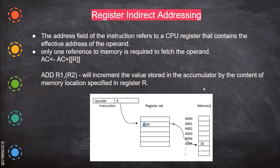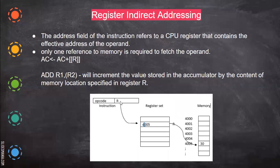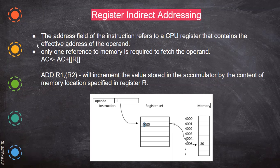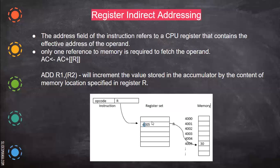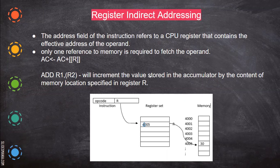Then register indirect addressing. Here the address field of the instruction refers to a CPU register that contains the effective address of the operand. It will consist of the memory location, so there is one memory location access and one register reference — that's why it's called register indirect addressing. The data is not present in the register; it has to go and get it from that memory address. Unlike indirect addressing where there are two memory location references, here there is only one memory location and one register reference. For example, add r1 with bracket r2 means it will increment the value stored in the accumulator by the content of the memory location specified in r2.